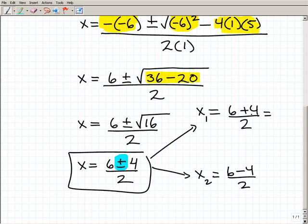All right, and when we do that, we get 10. 6 plus 4 is 10 divided by 2, it's going to be 5. And then over here, 6 minus 4 is going to be 2. 2 divided by 2 is 1. So 5 and 1 are, in fact, your two solutions to this quadratic equation.